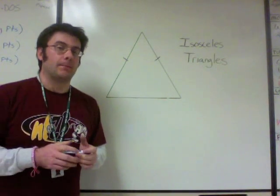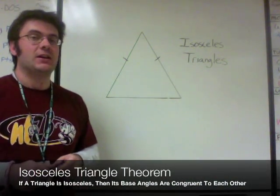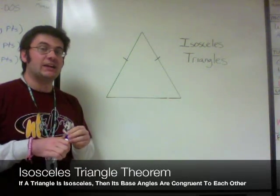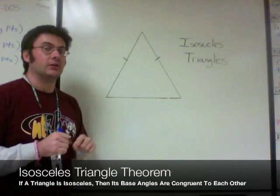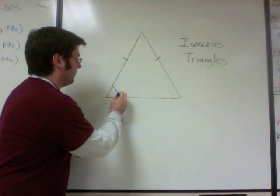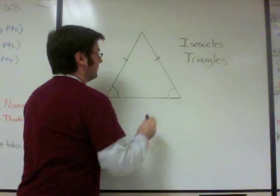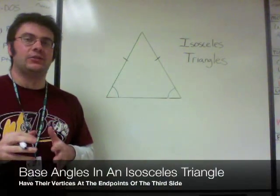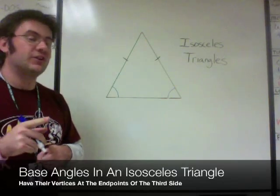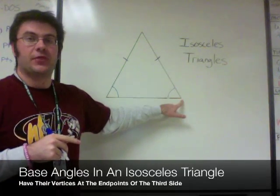We also have a theorem. The isosceles triangle theorem says that if a triangle is isosceles, then its base angles are congruent to each other. Let me show you how that looks in a diagram — so this angle and this angle.